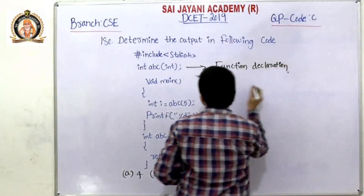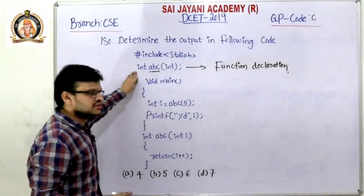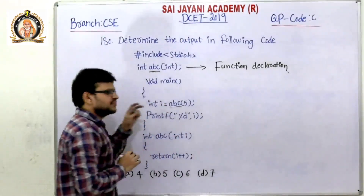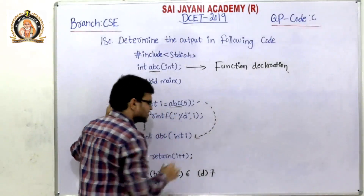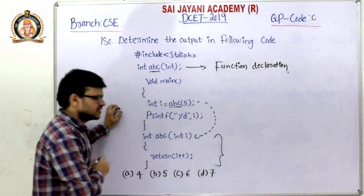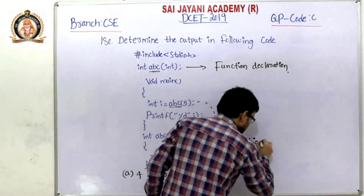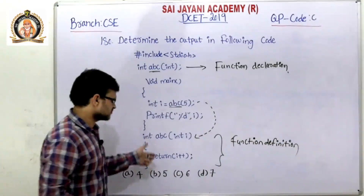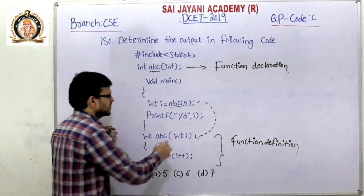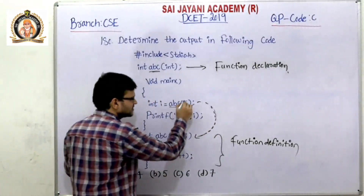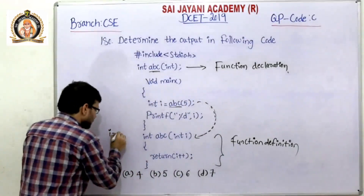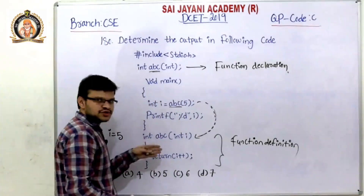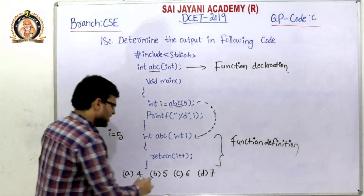Program execution always starts from the main function. In the main function we call the abc function, so control jumps to the function definition. In the function definition the actual program runs. Control goes to the function definition along with the value 5, so i value becomes 5 here.